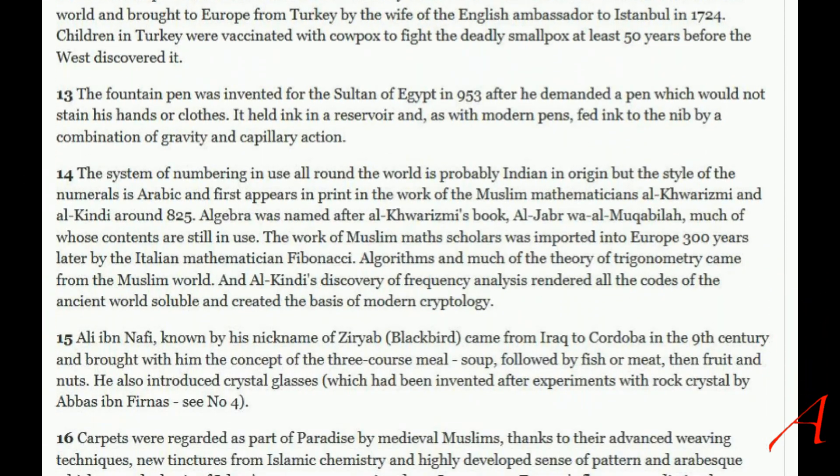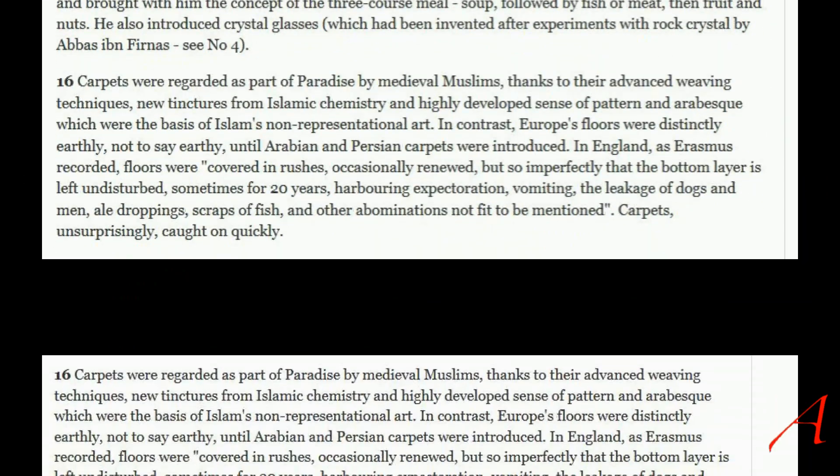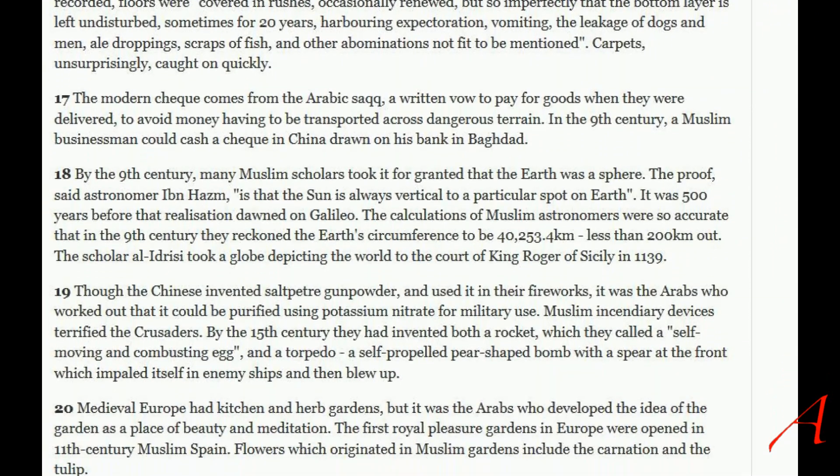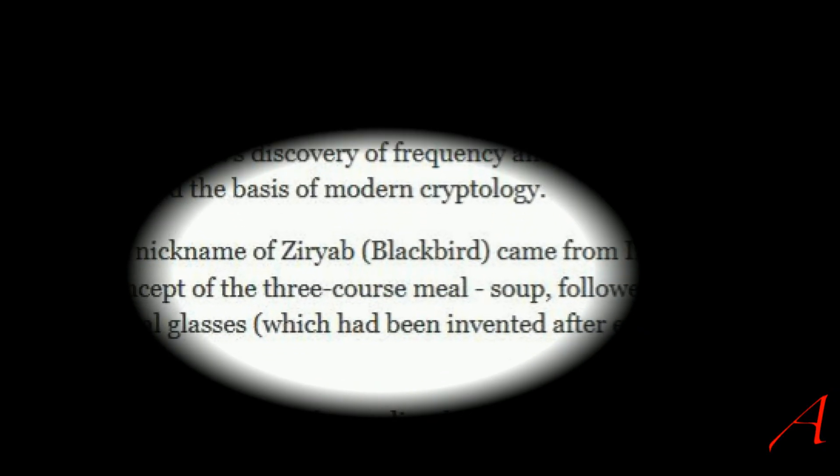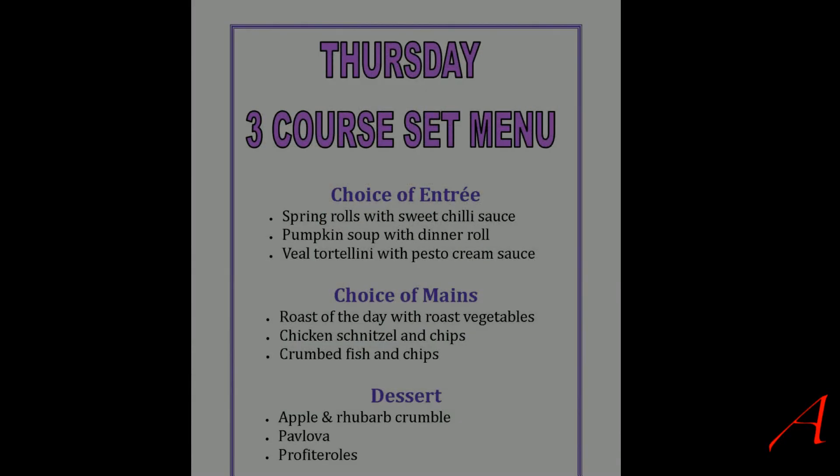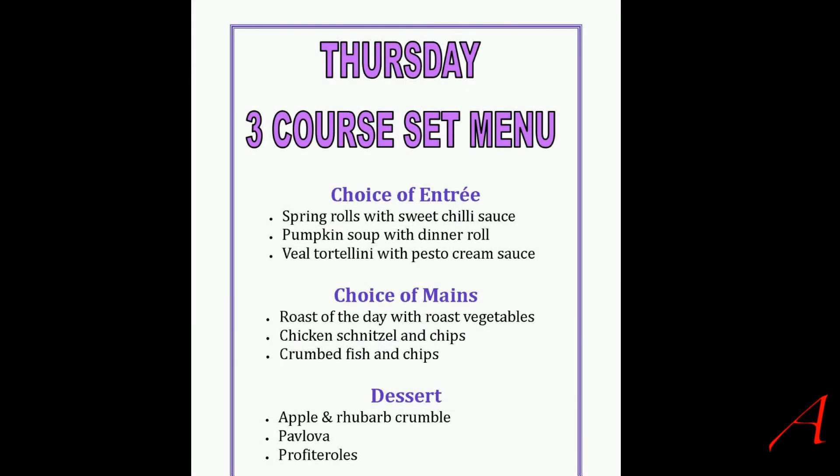He brings up 20 examples which include the top inventions by the religious ideology of Islam. One of the top inventions being, of course, the three course meal. Nobody else in history has managed to come up with this idea, and it took a devout and pious Muslim to invent eating something, then something more, and then finish by eating something. Oh boy, are these people embarrassed by anything?